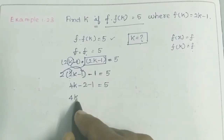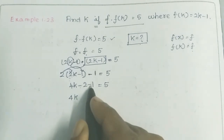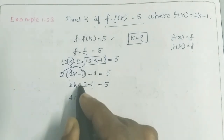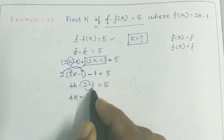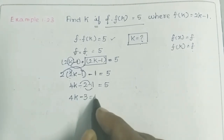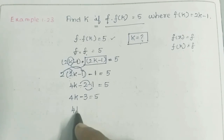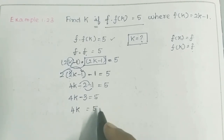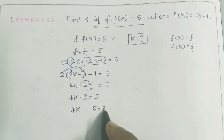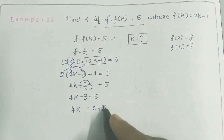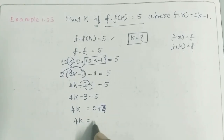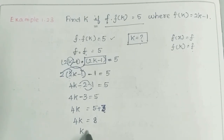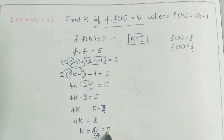So 4k minus 2 minus 1 equals 5. We combine the like symbols: 2 plus 1 is 3, so 4k minus 3 is equal to 5. Then 4k is equal to 5 plus 3, which is 8. And k is equal to 8 divided by 4, which is equal to 2.